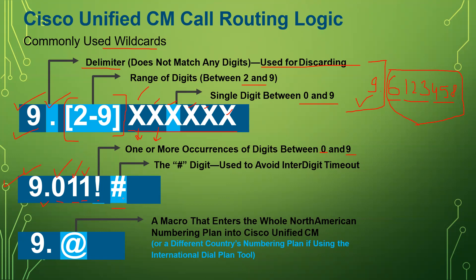Then we have the hash symbol. This is mainly used for the inter-digit timeout. If you press 9011 and then several digits but don't press hash, it will wait for that timeout — by default 15 seconds. If you press hash after entering the full number, the call will go through immediately without waiting.